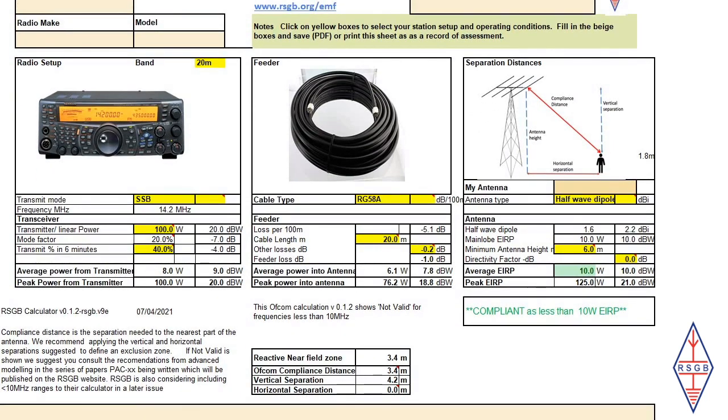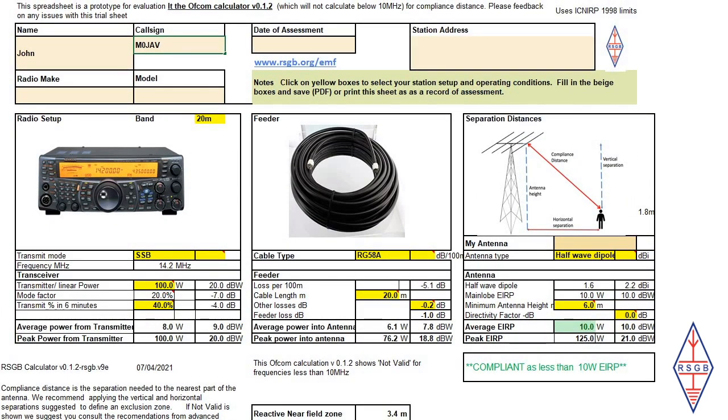Under that are the basic things that you need to put in to define your configuration. You'll see that there are three basic columns: first one to do with the radio setup, the second with the feeder, and the third to do with the antenna.